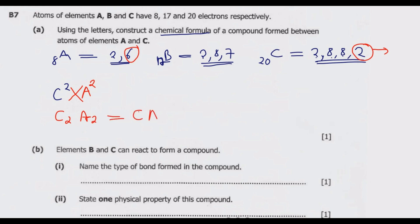Looking at question B: elements B and C can react to form a compound. Name the type of bond formed in the compound. You notice that B is a non-metal and C is a metal. What will be formed is an electron-losing and gaining bond, which is called an ionic bond, because one element is a metal and the other is a non-metal.